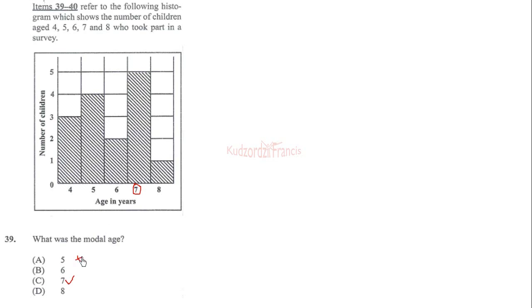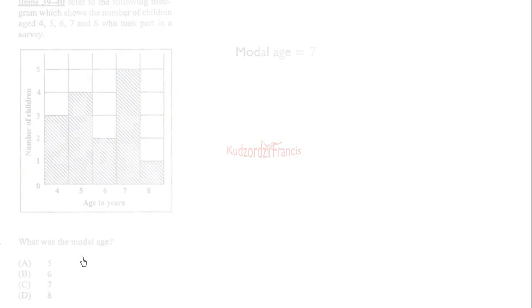Problem 40: how many children took part in the survey? To find the number of children, add all the frequencies. Age 4 appears 3 times, age 5 appears 4 times, age 6 appears 2 times, age 7 appears 5 times, and age 8 appears once. Adding all frequencies: 3 plus 4 plus 2 plus 5 plus 1. This gives 7 plus 7, which is 14, plus 1 equals 15. The correct answer is 15.